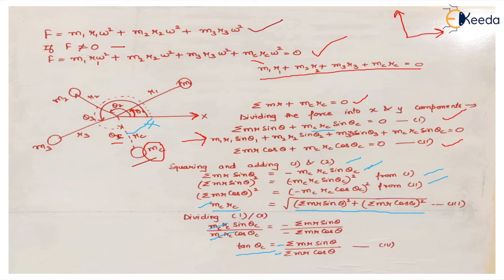One very important thing: whatever angle you calculate, the signs of the mr·sinθ and mr·cosθ terms are very important — do not cancel out these signs. The signs tell us in which quadrant the angle lies. Since sinθ is the vertical component and cosθ is the horizontal component, based on whether these values are positive or negative, we can determine which quadrant the counter mass angle falls in and get the correct answer.